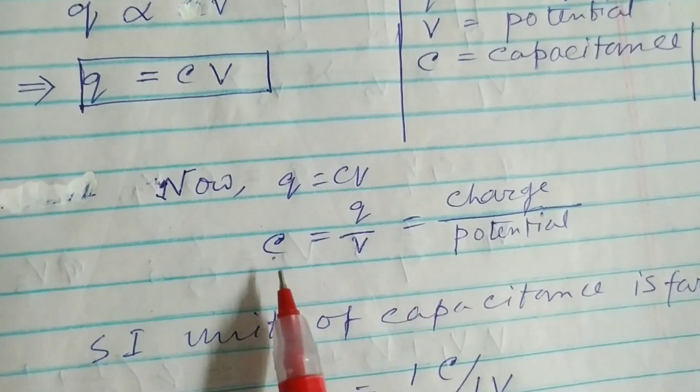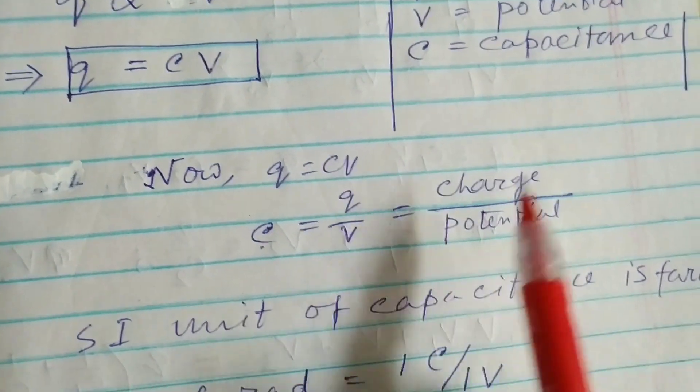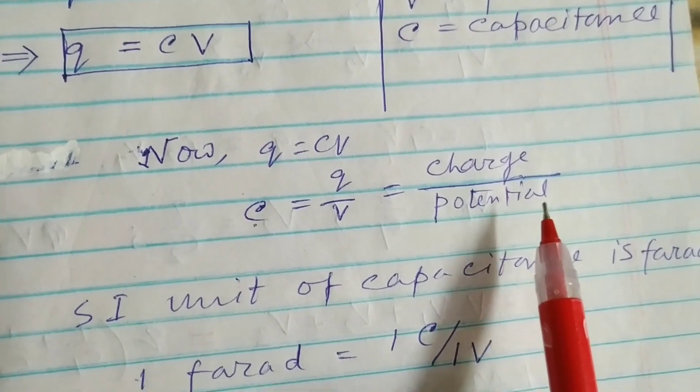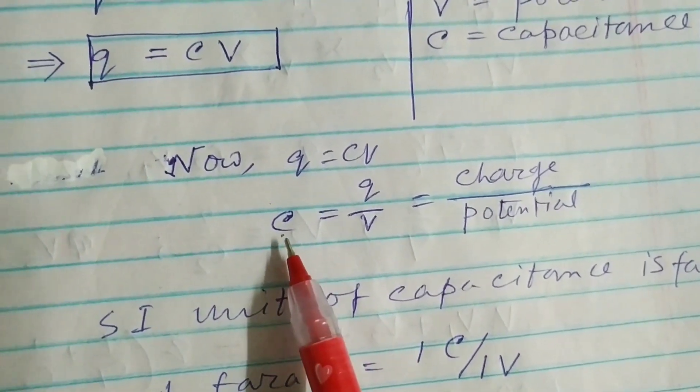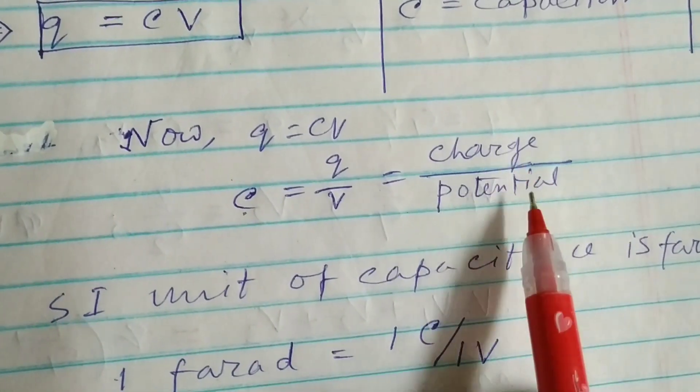Now Q equals CV. What is C? Q by V, that is charge by potential. So capacitance can be defined as the ratio of charge and potential.